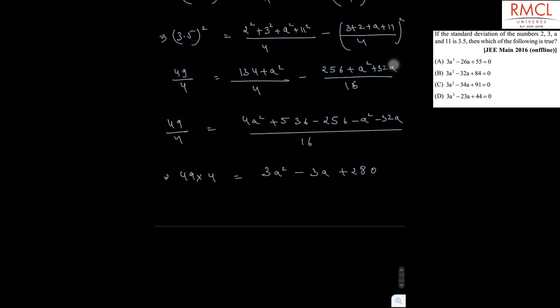So the equation will be 3a square minus 32a plus 84 is equal to zero. So this is the equation. Therefore, the correct option is B.